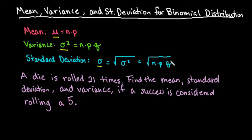The standard deviation is always found by taking the square root of the variance, so you would just take the square root of n times p times q. Make sure any time you are dealing with a binomial distribution that you use the correct notation, because these are parameters — they describe the population distribution.